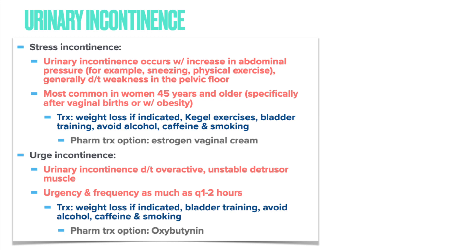A pharmacological option for stress incontinence is estrogen vaginal cream. Urge incontinence is caused by an overactive and unstable detrusor muscle, with urgency and frequency occurring as often as every one to two hours. Treatment includes weight loss, bladder training, and avoiding alcohol, caffeine, and smoking. The pharmacological treatment option for urge incontinence is oxybutynin.